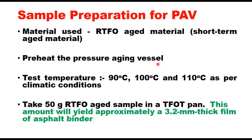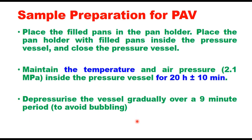To prepare the sample for PAV, take RTFO-aged binder — short-term aged material — and preheat the pressure aging vessel. The PAV test temperature can be 90 or 110 degrees centigrade depending on climatic conditions. Take 50 grams of RTFO-aged sample in a TFOT pan, which yields approximately a 3.2 mm thick film of asphalt binder. Place the filled pans in the pan holder, place the holder inside the pressure aging vessel, close the vessel, and maintain temperature and air pressure at 2.1 MPa for 20 hours ± 10 minutes.